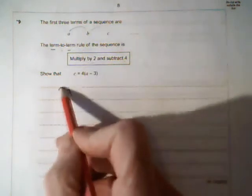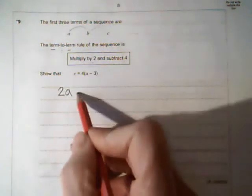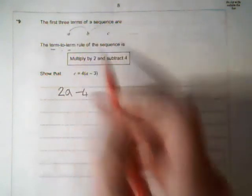So I'm going to multiply by 2: 2A. Subtract 4. And that gets me to the next one. That's B.